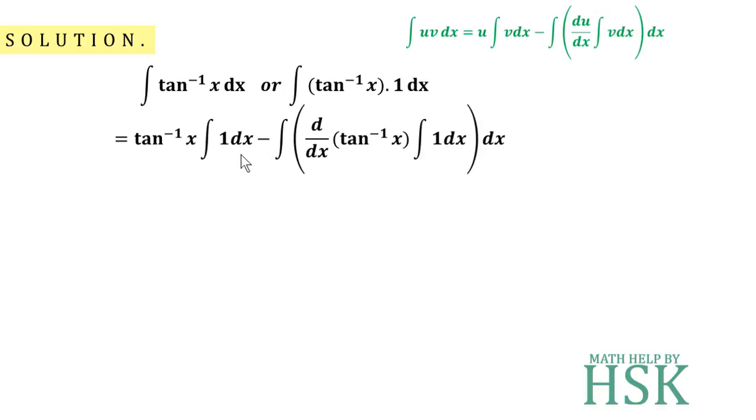The integration of 1 is x, so for both terms we write x. The differentiation of tan inverse x is 1 over 1 plus x square. So I get this as equal to x tan inverse x minus the integral of x over 1 plus x square dx.